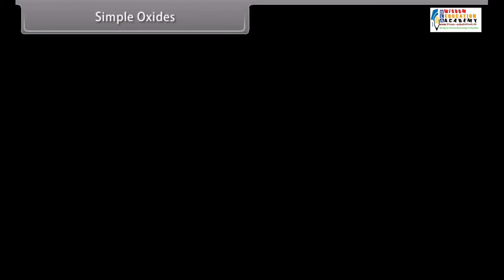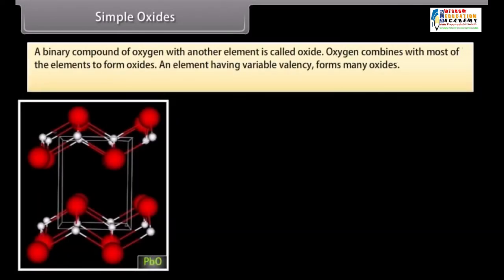Simple oxides. A binary compound of oxygen with another element is called oxide. Oxygen combines with most of the elements to form oxides.